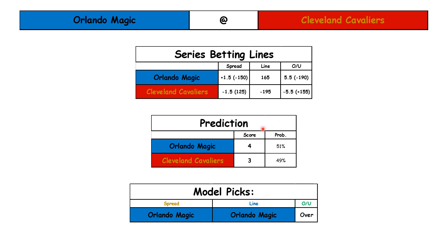Our model prediction: it looks like Orlando is going to squeak it out four games to three. We ran this Monte Carlo simulation 10,000 times and it came out 51-49 Orlando — that's how close this matchup is. The model likes Orlando on the spread, Orlando on the moneyline, and the over in the series. I'd like to give my two cents as well — I think it's going to be very close. I agree with the model on this one. I do think Orlando is going to give Cleveland fits, though their lack of experience might be the difference in a seven-game series. But I don't think they're going to get blown up. I don't think they lose four-to-none or four-to-one. I think this might go seven.